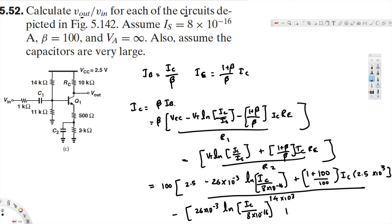Then plus 1 plus 100 over 100 I_C times R_E, again that is 2.5 times 10 to the power of 3. This time we have to divide this one by R2, that's 11k, that's 11 times 10 to the power of 3. And that's it. If you calculate I_C, that will become 163 times 10 to the power of minus 6.